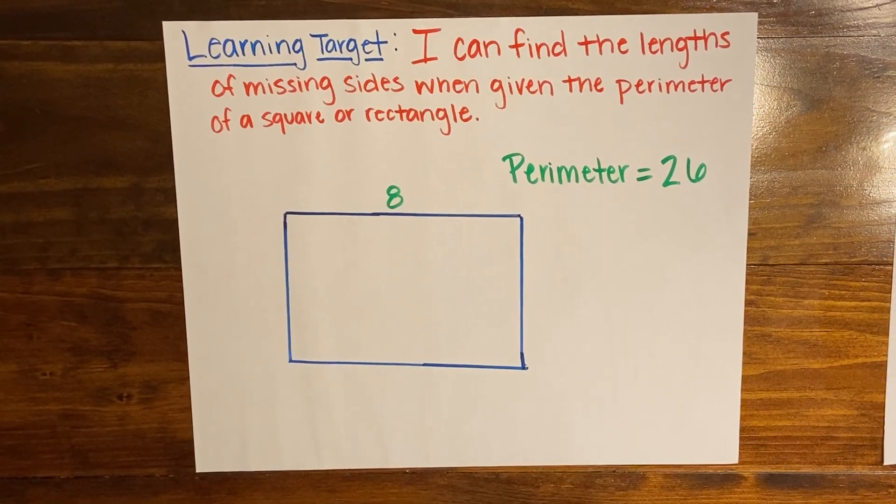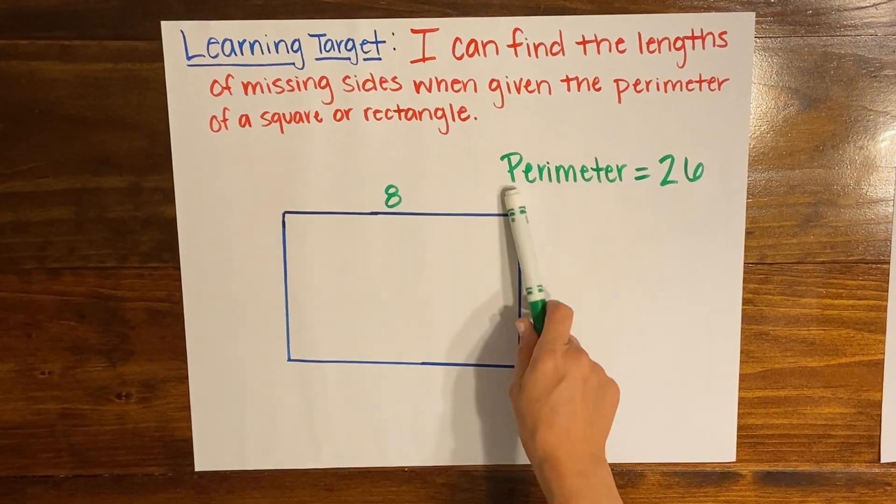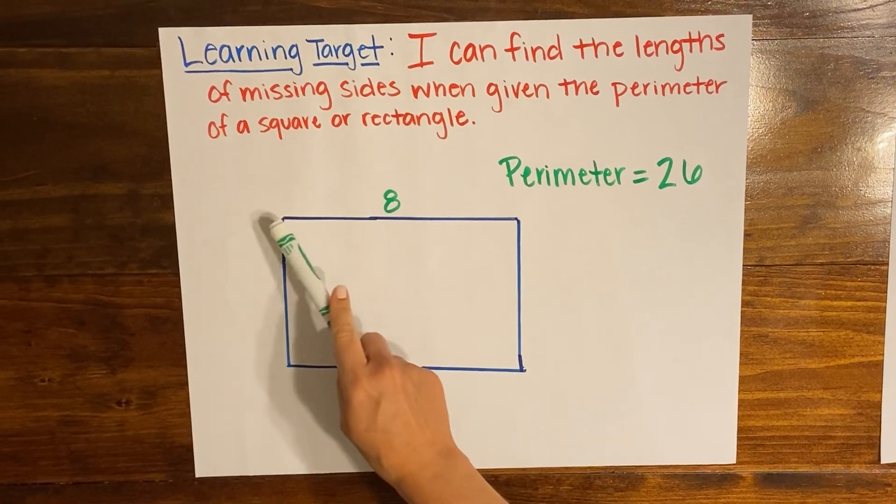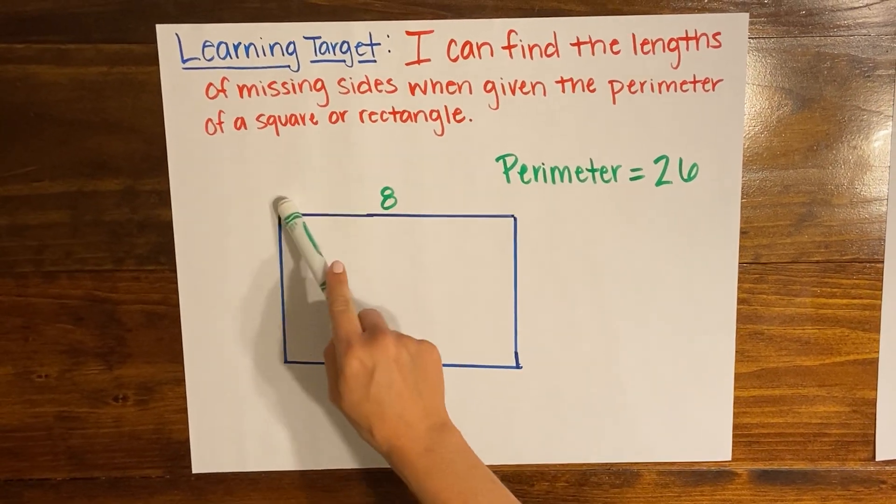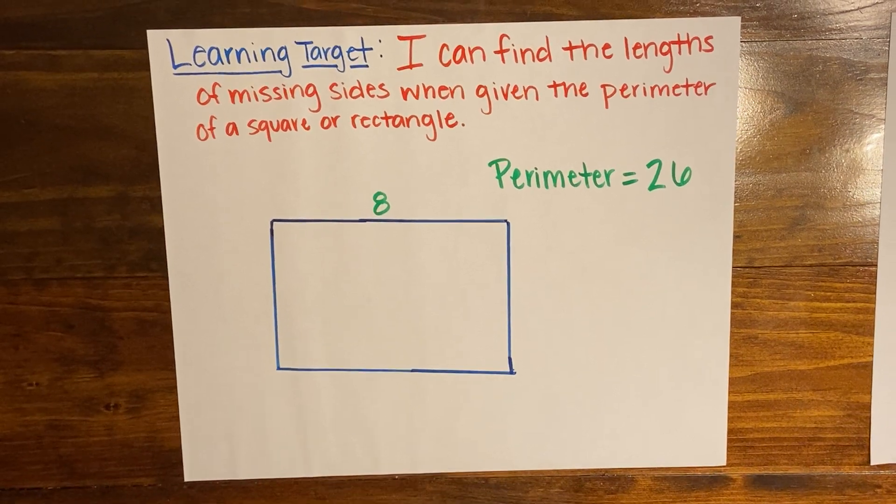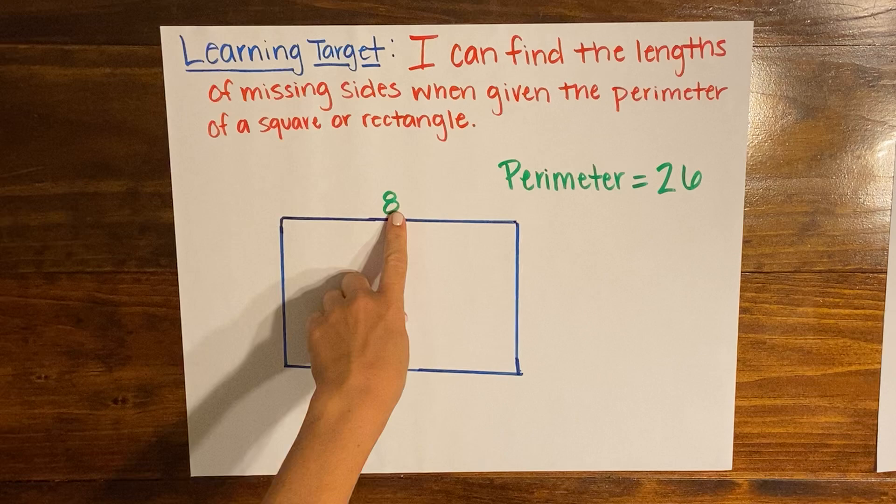Today we're gonna start first with the rectangle, and in this problem we've been given the perimeter of 26. So we know based on the work we've already done that that means all of these sides added together would equal 26. So what do we do when we don't have all of the sides to add together?